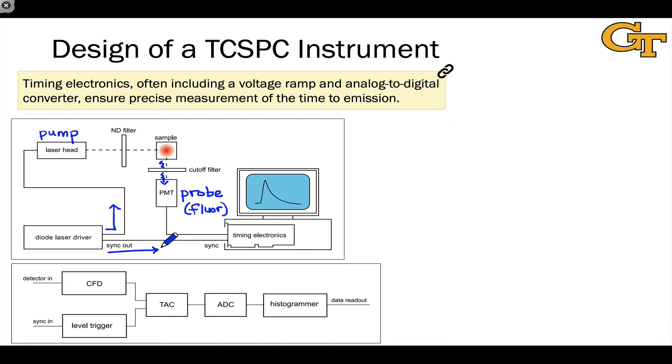This avoids scattering issues of the incident light and other emissions that may not be directly relevant to fluorescence. And that photon is detected at the photomultiplier tube. At that instant, we get a signal back to the computer that says, turn off your stopwatch and record the time that has elapsed. And what actually happens is that voltage ramp is stopped. And then a time to amplitude converter converts the voltage signal into a time. An analog to digital converter puts that time in digital form. And then a histogrammer essentially plots that time, adds that time to our running histogram of times to emission.